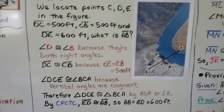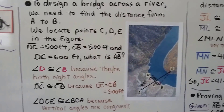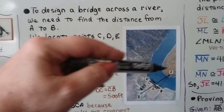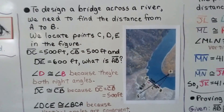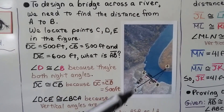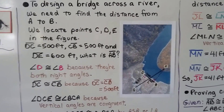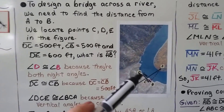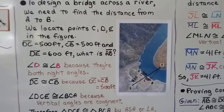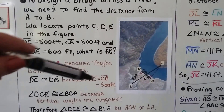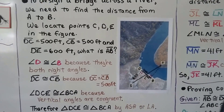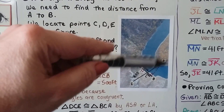To design a bridge across a river, we need to find the distance from A to B. We locate points C, D, and E in the figure. Segment DC is 500 feet, segment CB is also 500 feet, and segment DE is 600 feet. So what's segment AB — what is that figure distance?